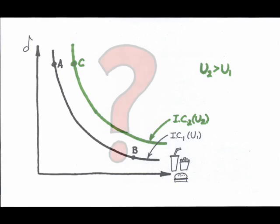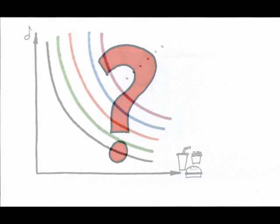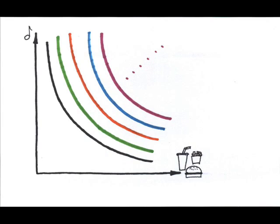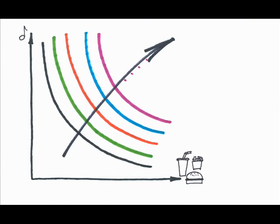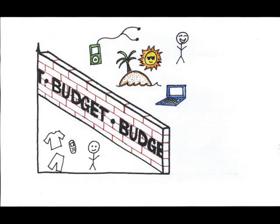How many of these indifference curves does a consumer have? Every consumer has an infinite number. Where does the consumer want to be? On the highest possible indifference curve, meaning that this individual wants to keep moving in this direction. What stops the consumer from moving higher and higher forever? Their budget. It's like a big brick wall, preventing you from being infinitely happy.